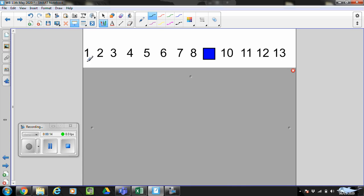So let's start by just counting along it. 1, 2, 3, 4, 5, 6, 7, 8. What do you notice? I've covered one over. What number have I covered over? That's right, number 9. Let's carry on counting. 10, 11, 12, 13.